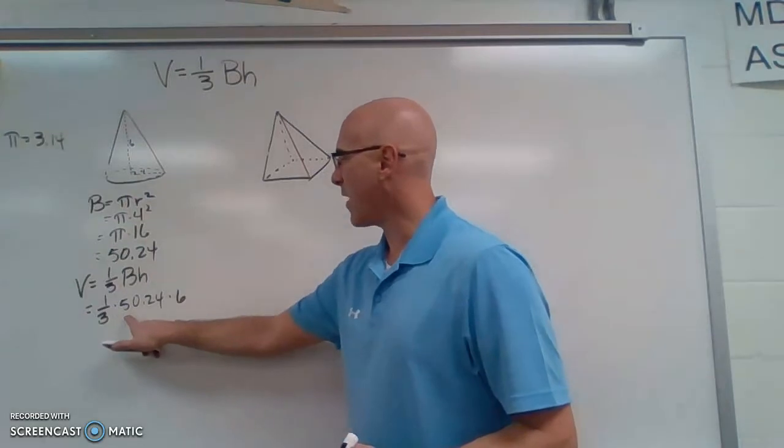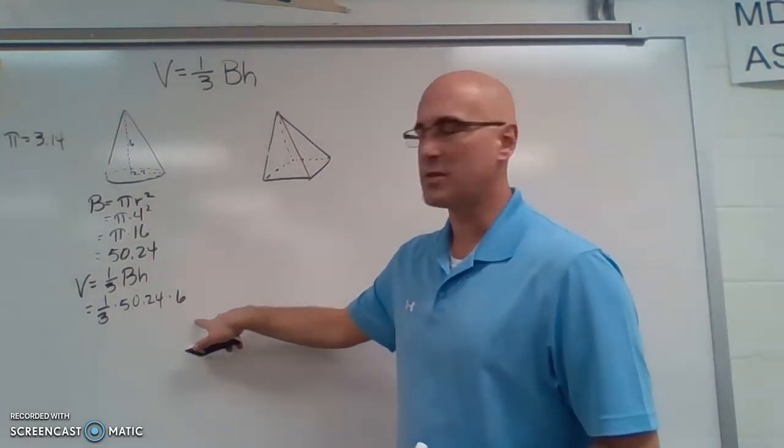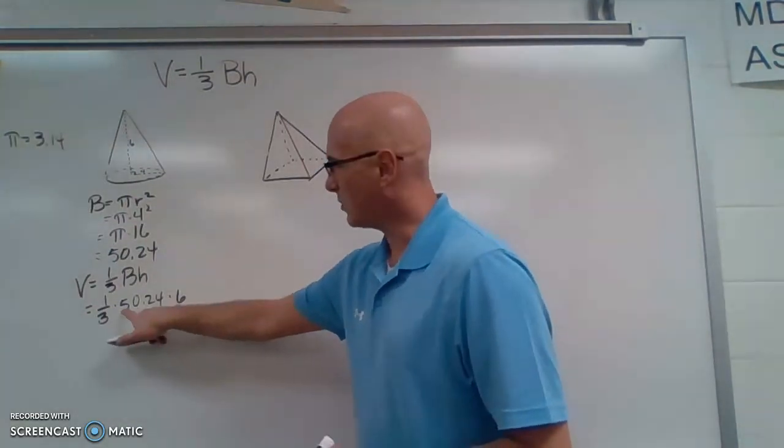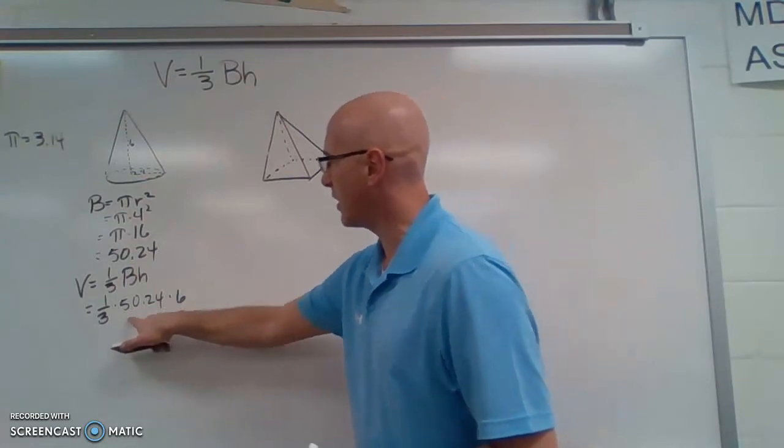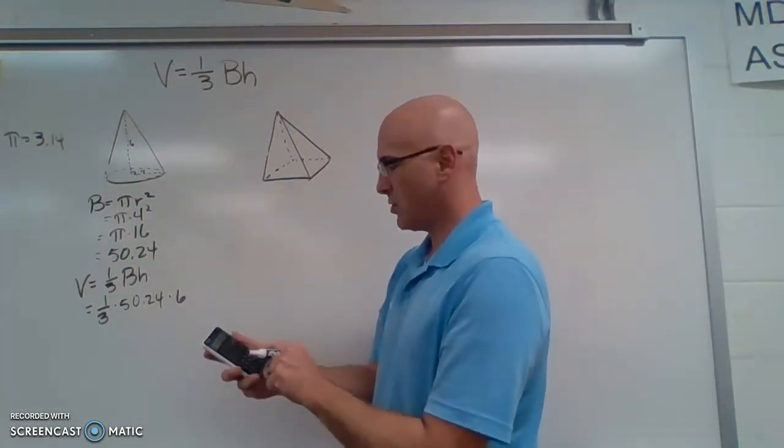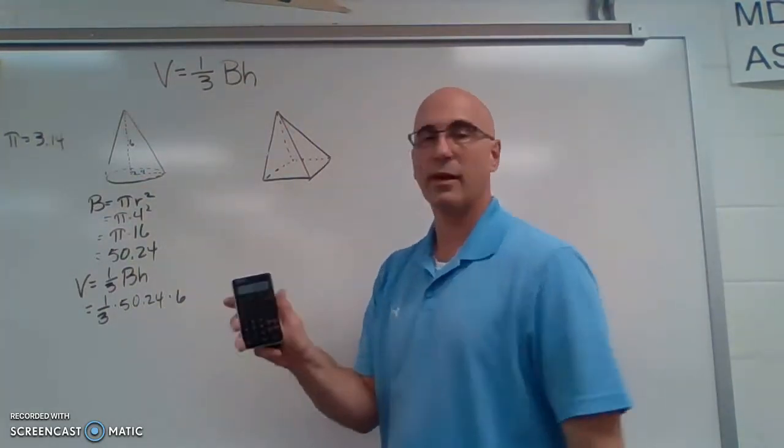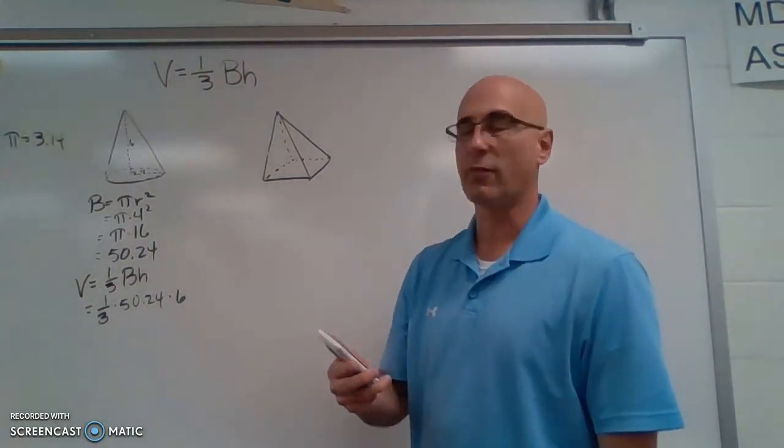So when we have a fraction and some decimals, let's do the fraction last. So let's multiply these two together. 50.24 times six, we get a pretty big number, 301.44.